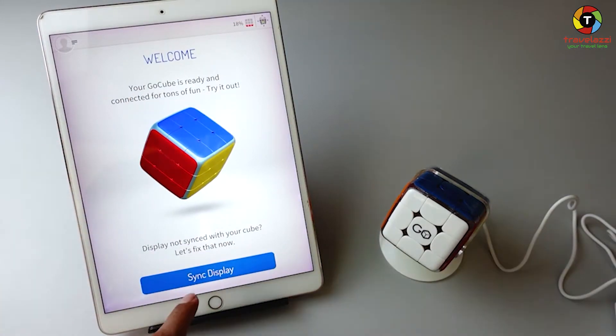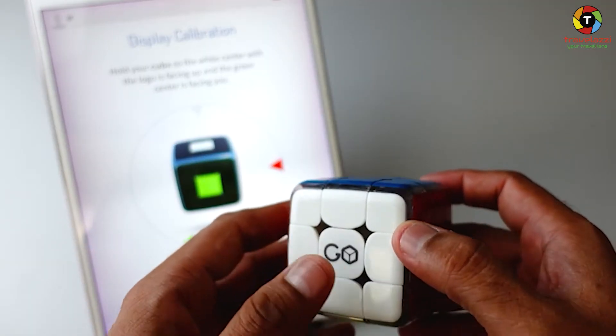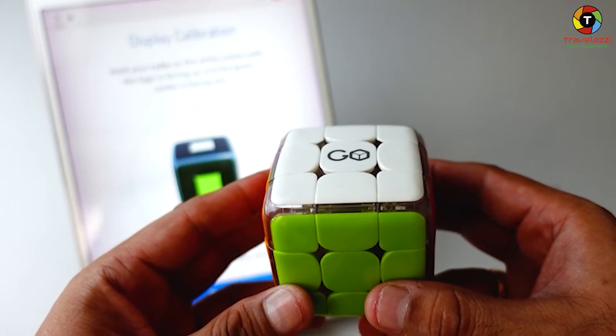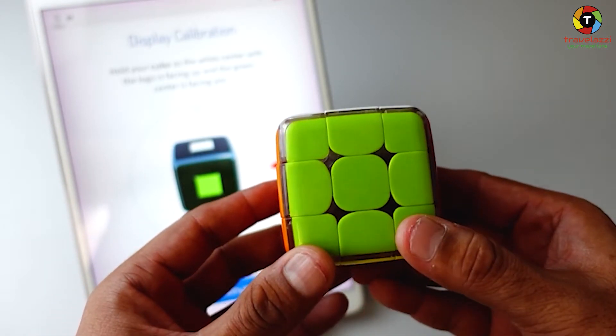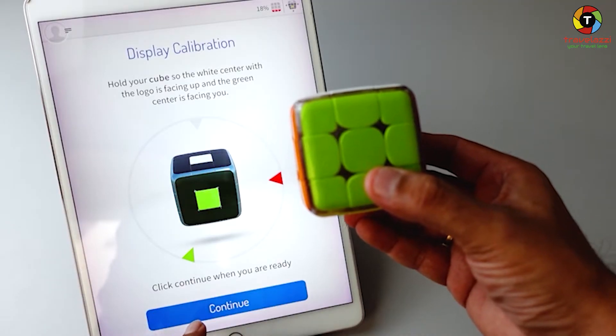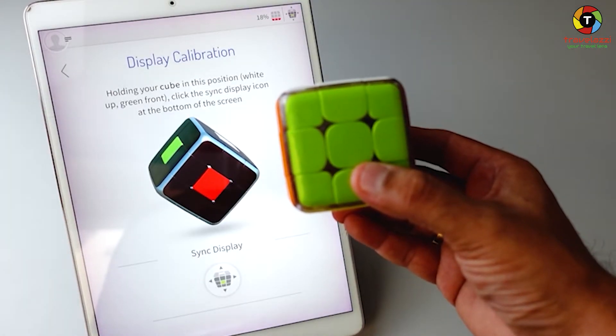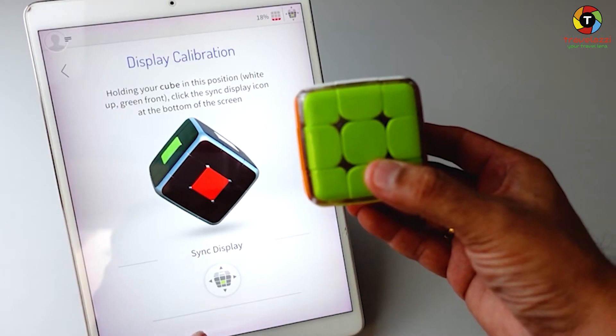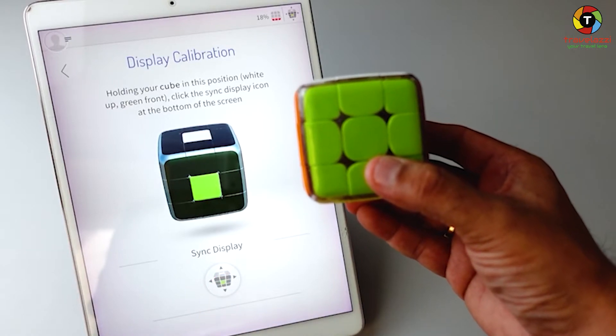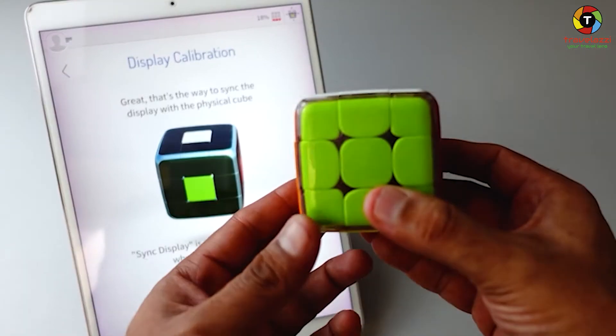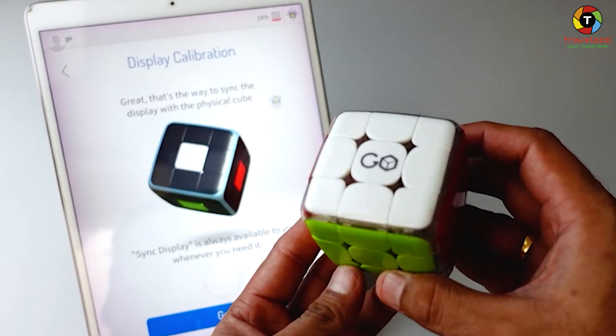Let's sync the display. Click on the sync display button. Hold your cube so that the white center with the logo is facing up, so that's the logo facing up, and the green center is facing you. That's the green center facing me right now. Click continue when you are ready. Holding your cube in this position, click the sync display icon at the bottom of the screen. The display calibration has been done.